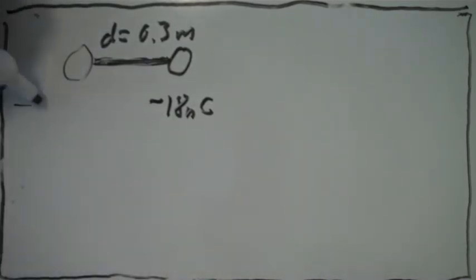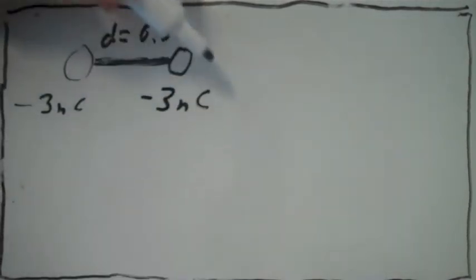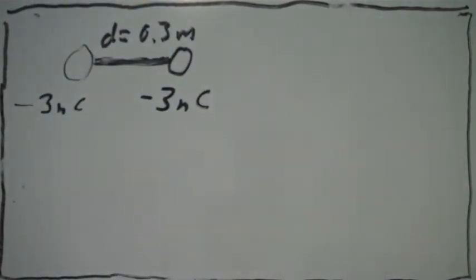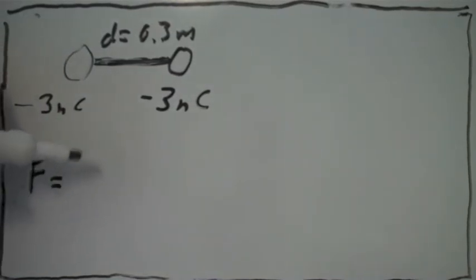One of them is going to have a charge of -3 nanocoulombs and the other one is going to have a charge of -3 nanocoulombs, because the net charge was -6 initially and the net charge is still -6, but -3 on each sphere.